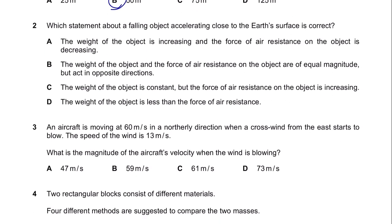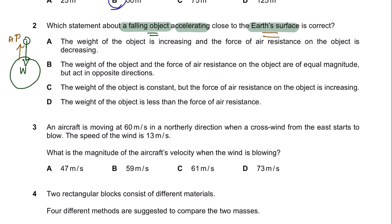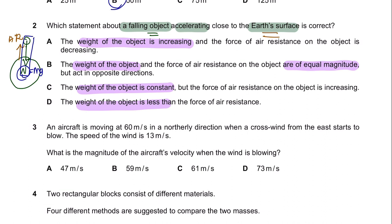Question 2. Which statement about a falling object accelerating close to the Earth's surface is correct? When an object is falling due to gravity, it will face two different forces: its weight, and since it's close to the Earth's surface, air resistance. Since the mass of the object and gravity don't change, the weight of the object as it falls will remain constant. So the answer could be either B or C.